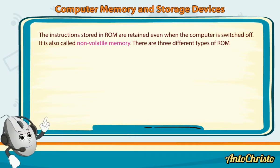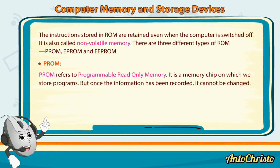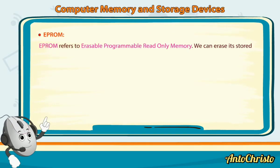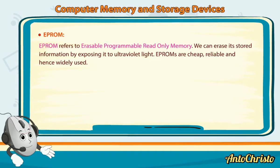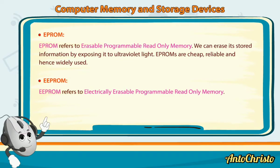There are three different types of ROM: PROM, EPROM and EEPROM. PROM refers to Programmable Read Only Memory — it is a memory chip on which we store programs, but once the information has been recorded, it cannot be changed. It can be programmed only under special conditions, and PROMs are non-volatile. EPROM refers to Erasable Programmable Read Only Memory; its stored information can be erased by exposing it to ultraviolet light. EPROMs are cheap, reliable and widely used. EEPROM refers to Electrically Erasable Programmable Read Only Memory; the information written on it can be erased using electrical signals.